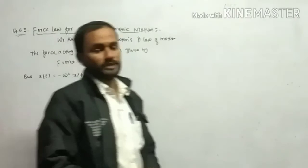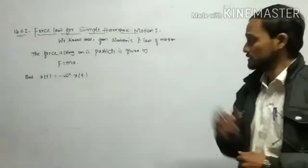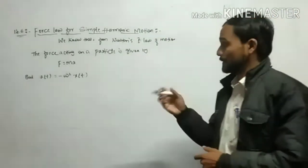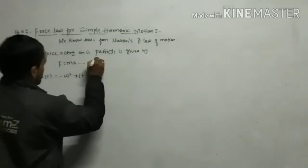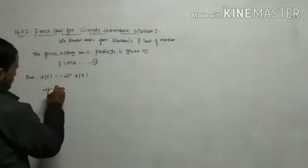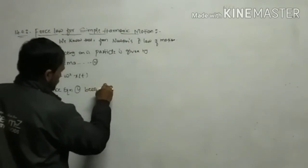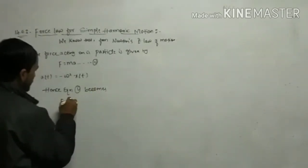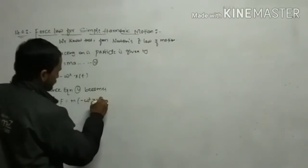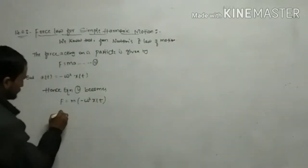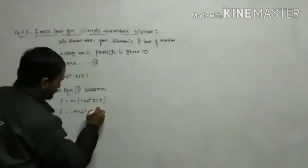The acceleration ranges between minus omega A and plus omega A. This is equation 1. So substituting, equation 1 becomes: F is equal to m times minus omega squared x(t), so F equals minus m omega squared x(t).